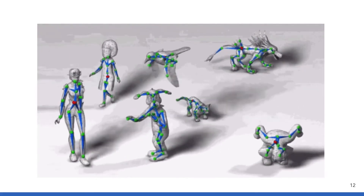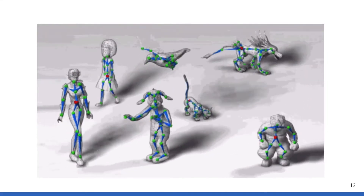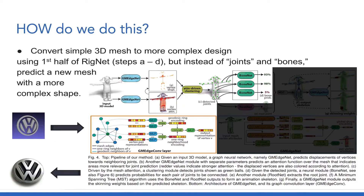But how is all this related to 3D logo design? After extruding our 2D logos to 3D using simple geometry, we will then pass them through a modified version of Rignet that has been retrained to take a simple extruded 3D logo as input and return a modified 3D design as output, essentially translating one graph into another one, just as it was doing before with animation skeletons.